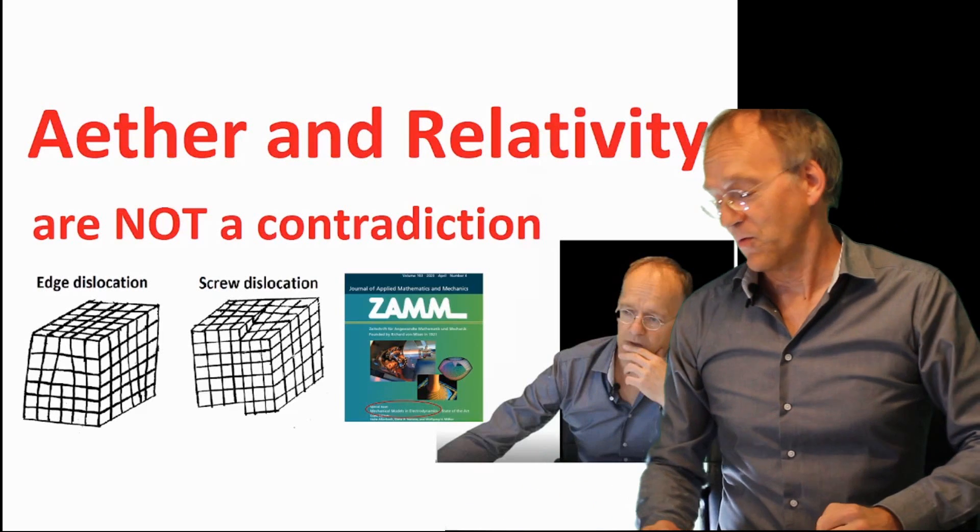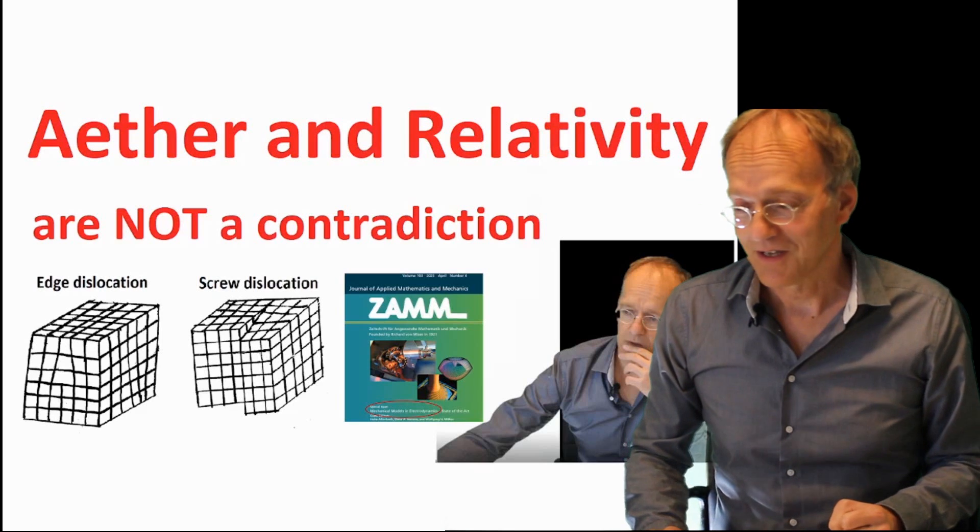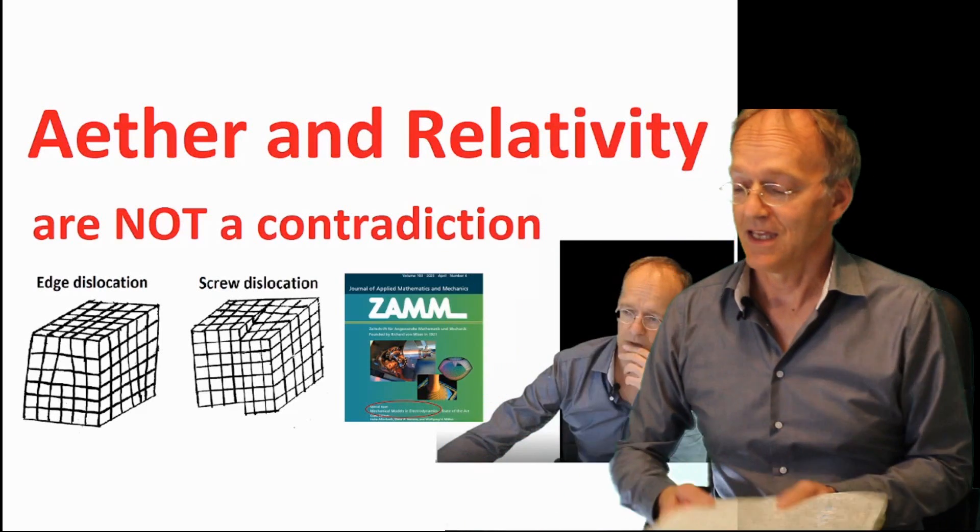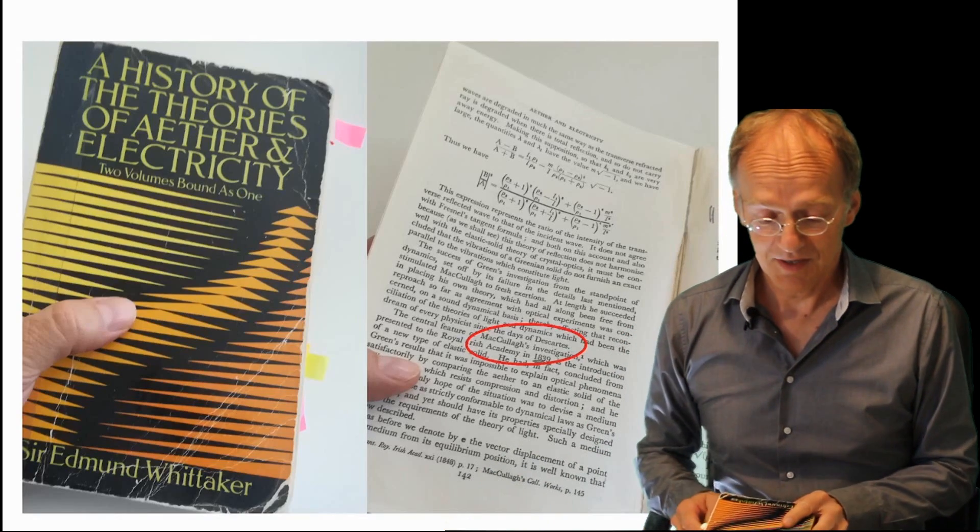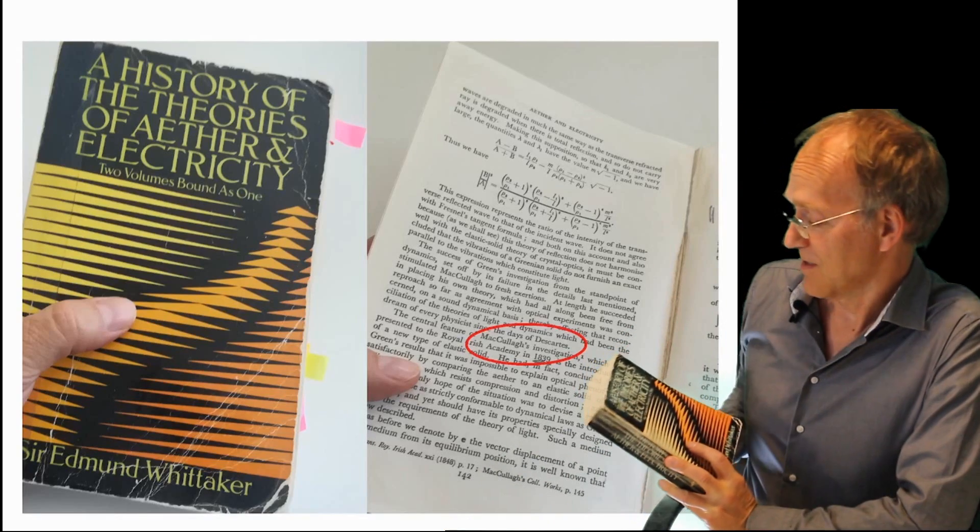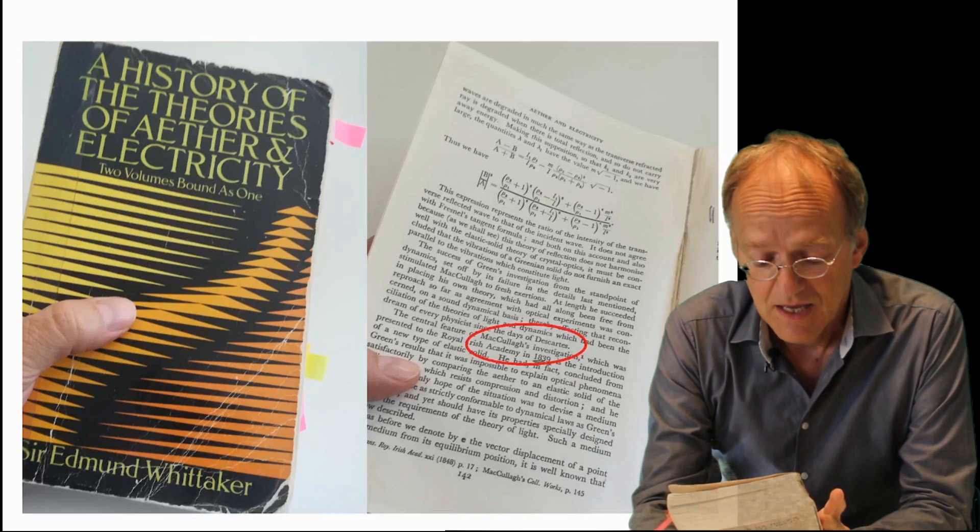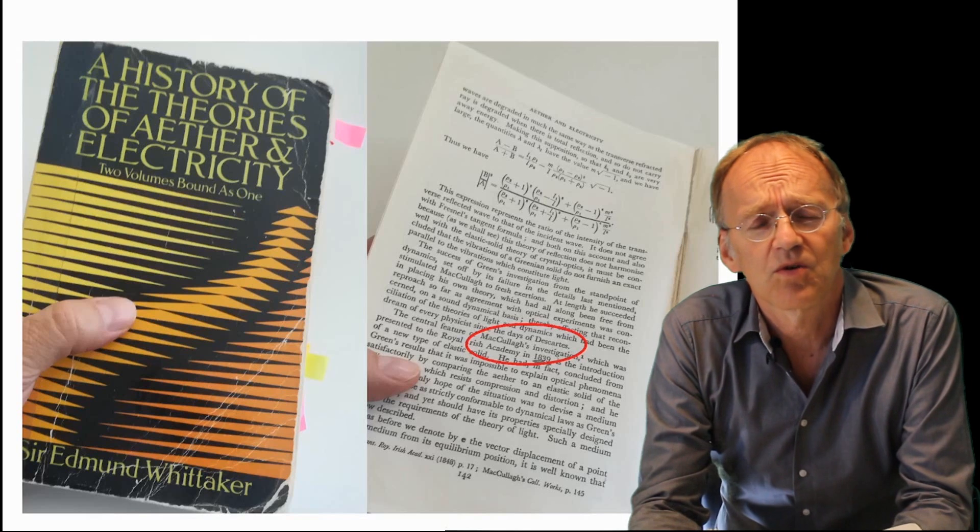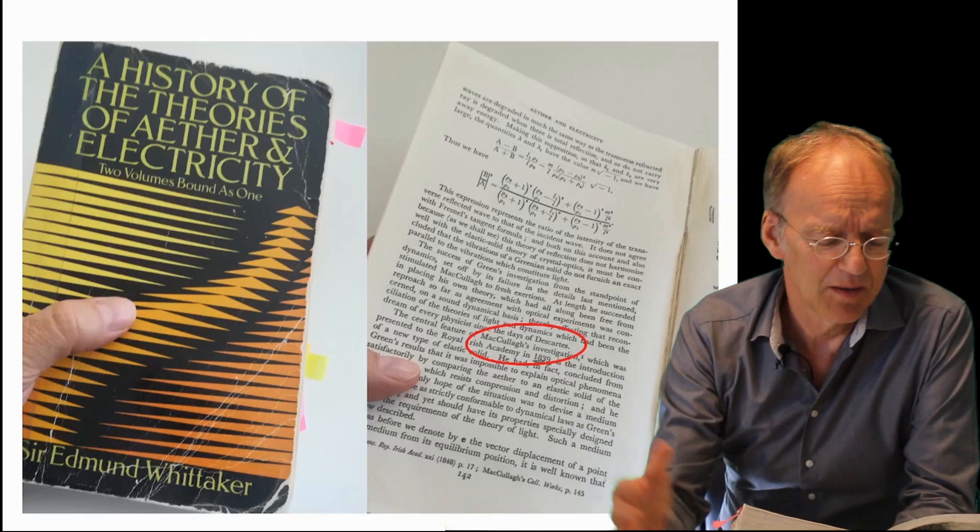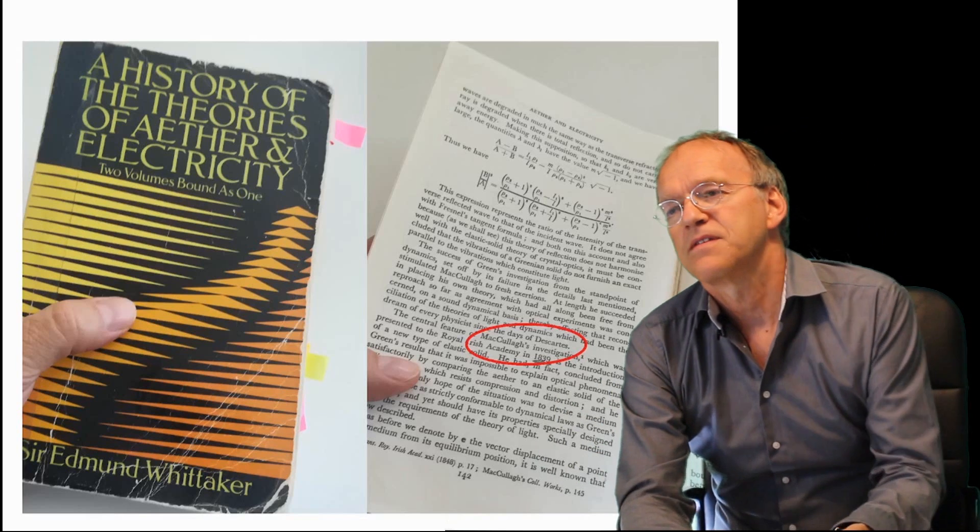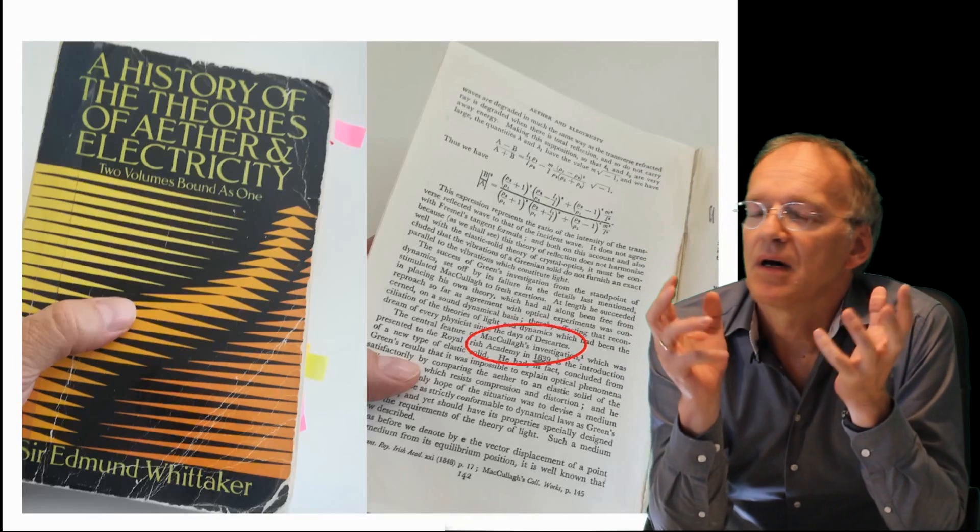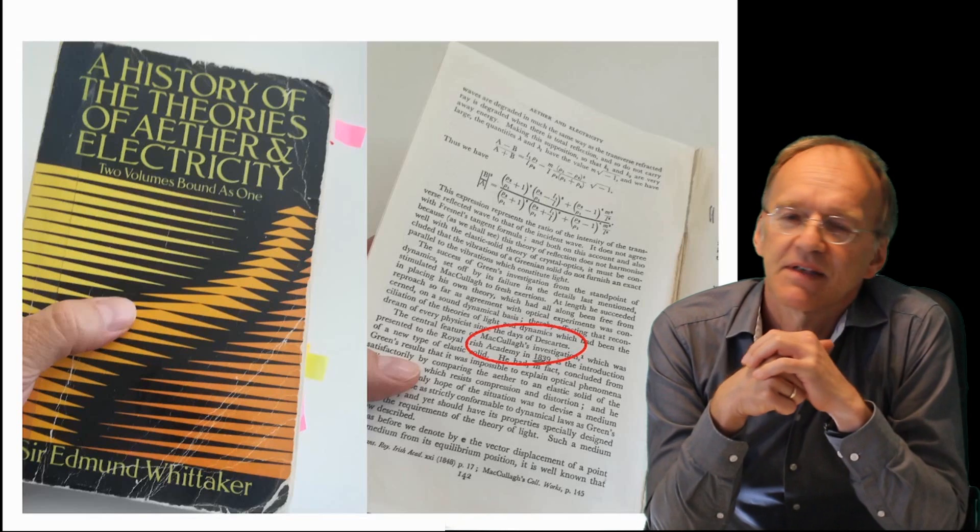You might want to watch my first video, Ether and Relativity, on that topic of defects. But today we are going right into the matter with McCulloch's theory of the incompressible ether, and this is contained in this fantastic book, A History of the Theories of Ether and Electricity by Sir Edmund Whittaker.